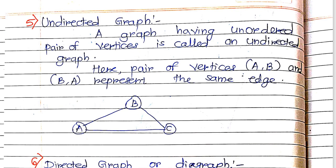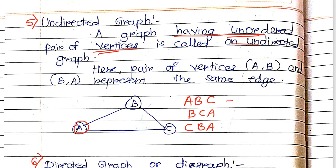Next is undirected graph. A graph having an unordered pair of vertices is called an undirected graph. There is no fixed order — for example, a graph with vertices A, B, C can be represented as A-B-C, or B-C-A, or C-B-A in any order. That is why it is called undirected. You can represent an edge A-B as either A-B or B-A.